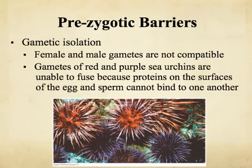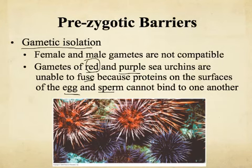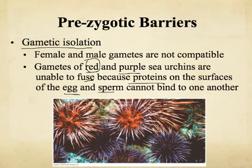The last prezygotic barrier is gametic isolation. This is when the egg and sperm are physically not able to combine because they are not compatible. For example, the egg and sperm of the red and purple sea urchins cannot fuse to form a zygote because proteins on the surface of the egg and sperm cannot bind to one another. The red sea urchin had a mutation that put different proteins on the surface of their egg and sperm, so the egg of the red sea urchin can no longer combine with the sperm of a purple sea urchin — they are considered different species.